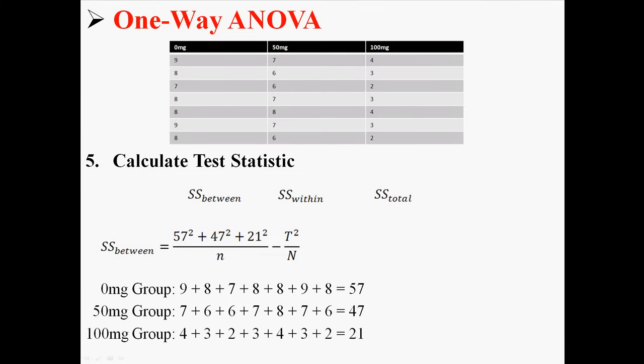Now t squared, well t just refers to the total sum. So if you add all the numbers together, you know if you add together 57, 47, and 21, you get a t of 125. And we already know lower case n and capital N. We know that they're 7 and 21. So we can find sum of squares between. If we solve for it, we get 98.67.